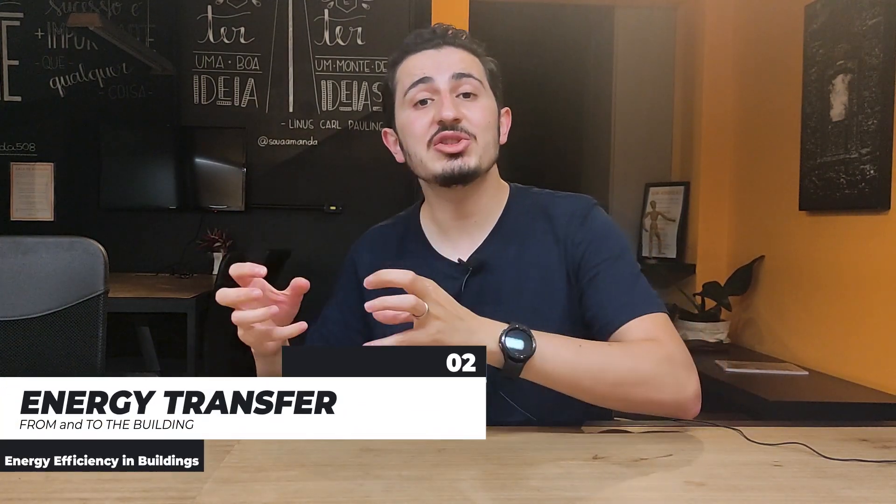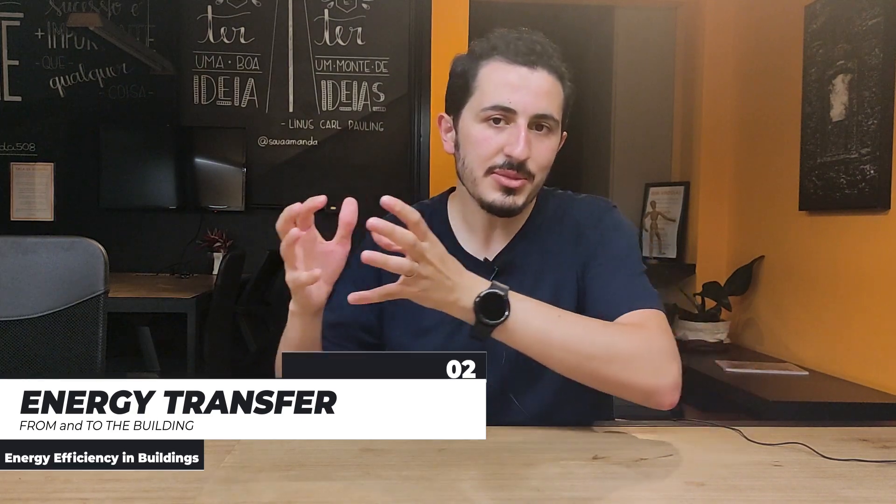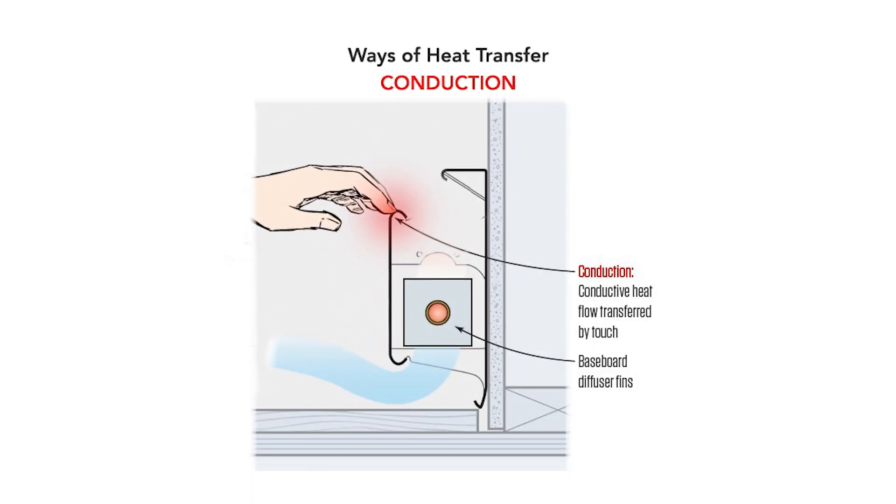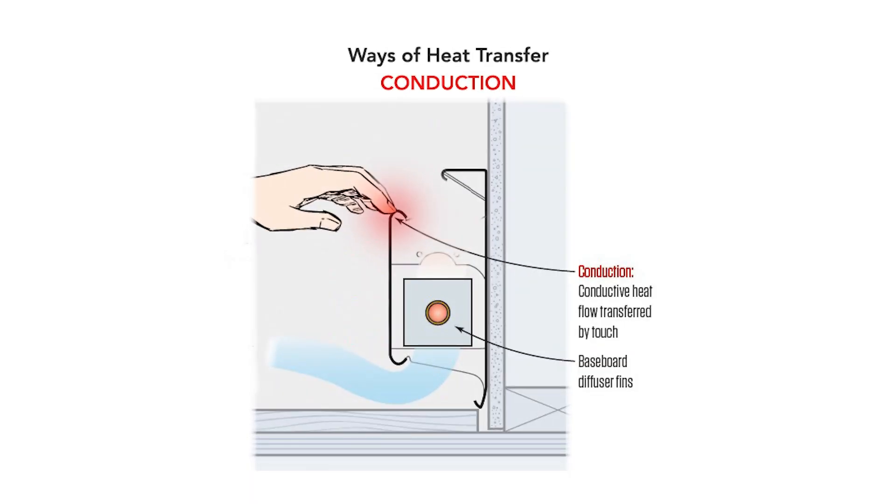We should understand how energy transfers from and to the building. This energy exchange between the building and the exterior — what we call energy transfer — occurs through three physical concepts: conduction, convection, and radiation.